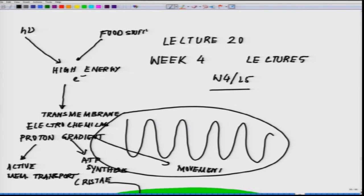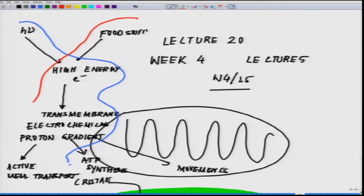The major chunk of what you have studied so far is the photosynthesis part. Today we will be studying about the mitochondrial fragment — what is happening in the mitochondria. This is the overall framework of the mitochondrial structure.